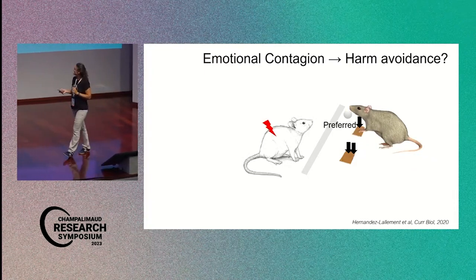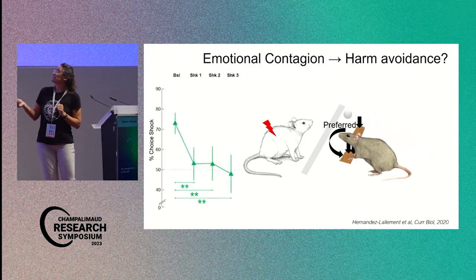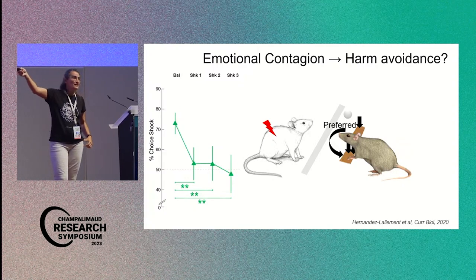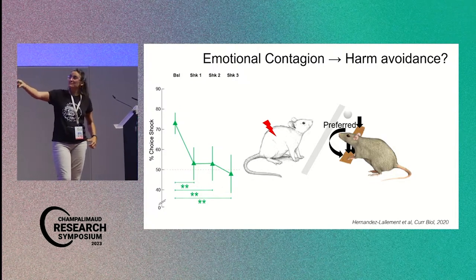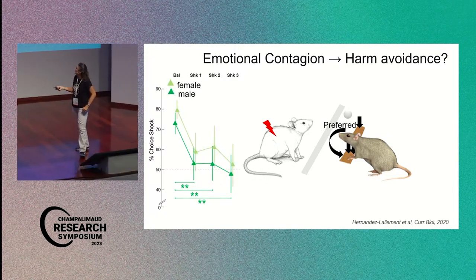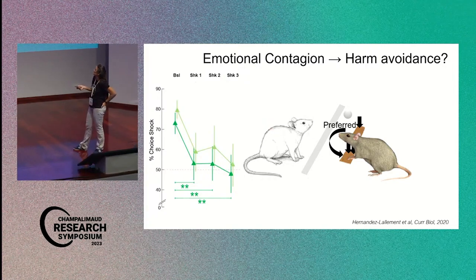And indeed, it does. If I plot the choices, you see that at the very beginning, they have a strong preference for one of the levers, and then this preference drops as soon as I start giving the shock to the conspecific. And this is independent of the sex of the animal. They do in both cases equally.